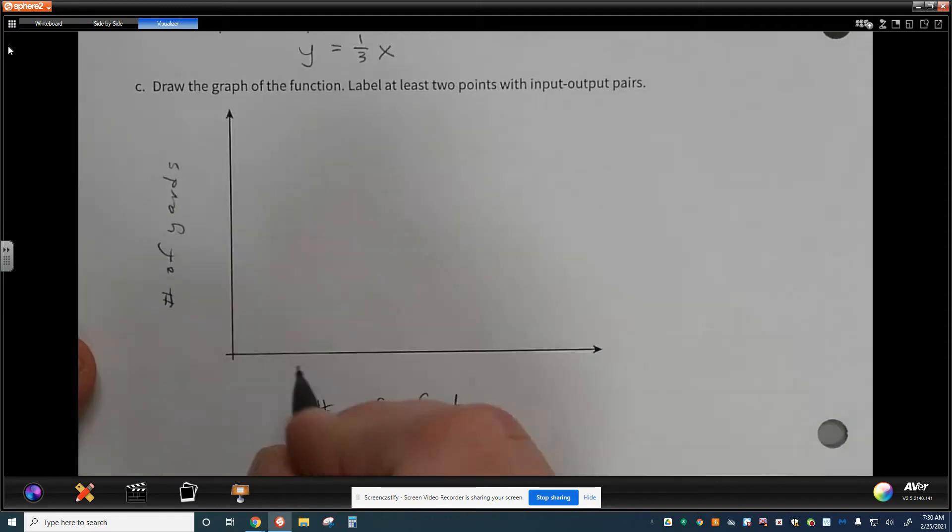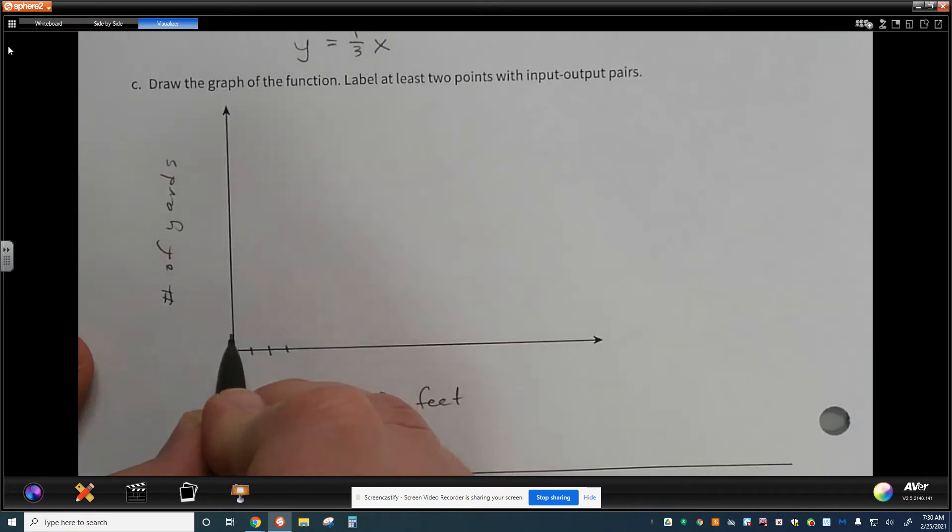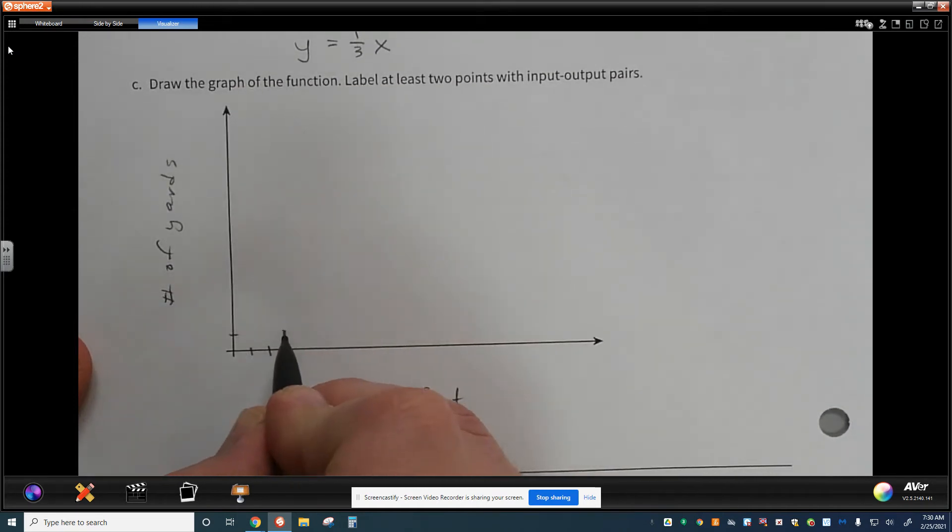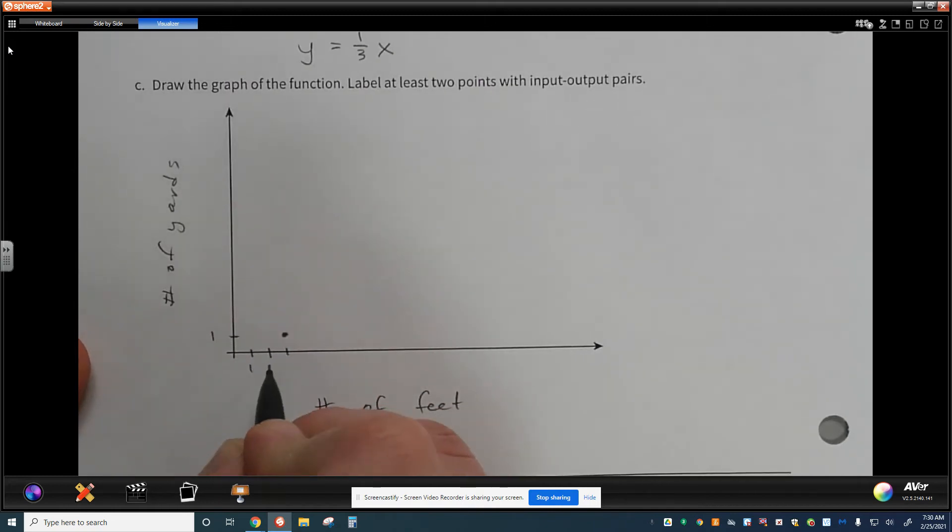If I know that I have three feet in one yard, I can set it up like that. So three feet in one yard. So that would be one, and this would be one, two, three. And I could continue that pattern of four, five, six for another foot.